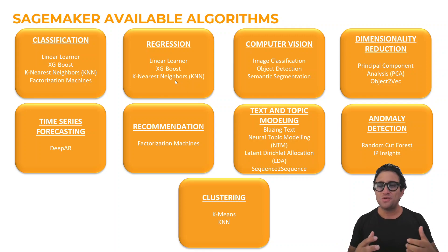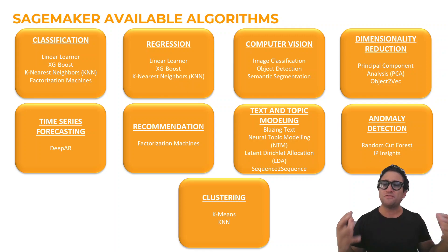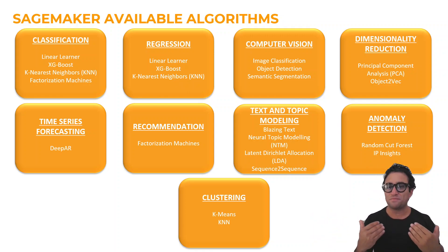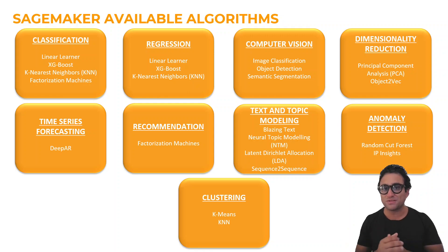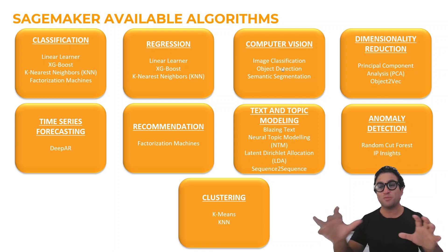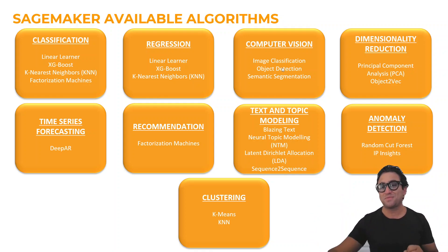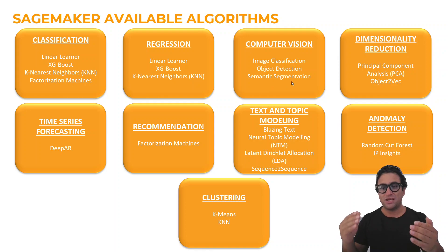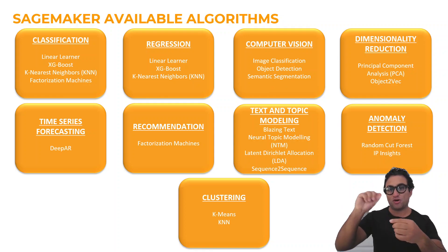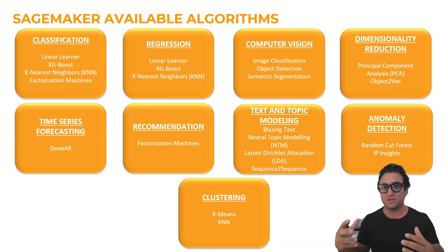What if you wanted to do computer vision and solve computer vision problems? You can use the image classification algorithm. We also have object detection if you wanted to detect objects in a scene. We also have semantic segmentation, in which we can do pixel-level segmentation of objects in the scene.